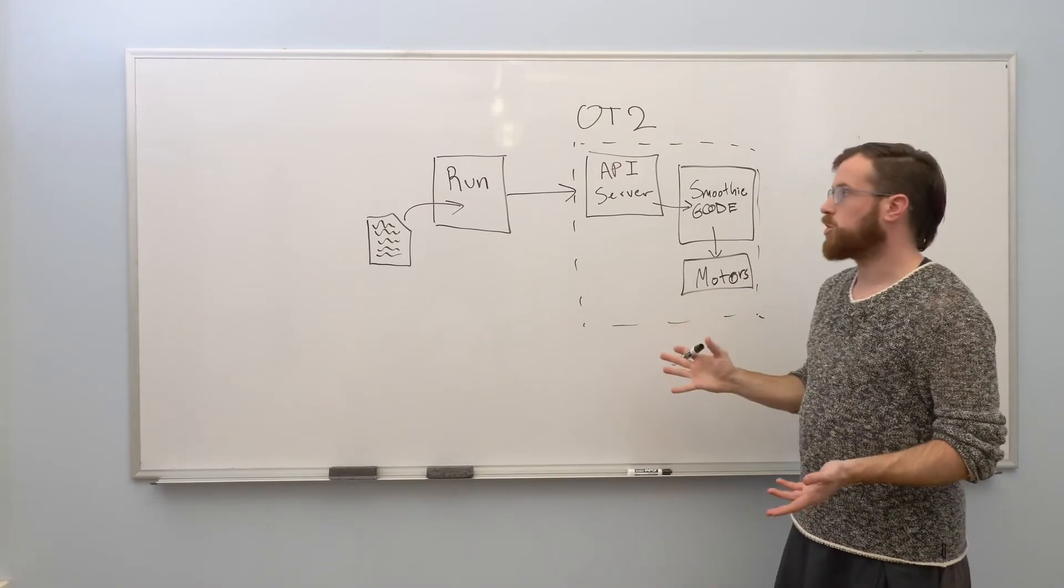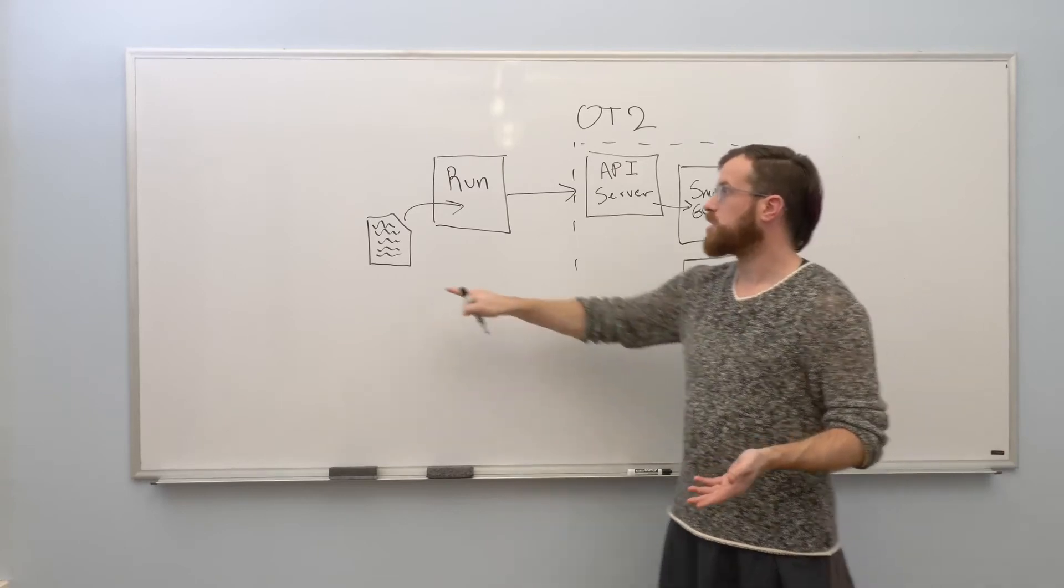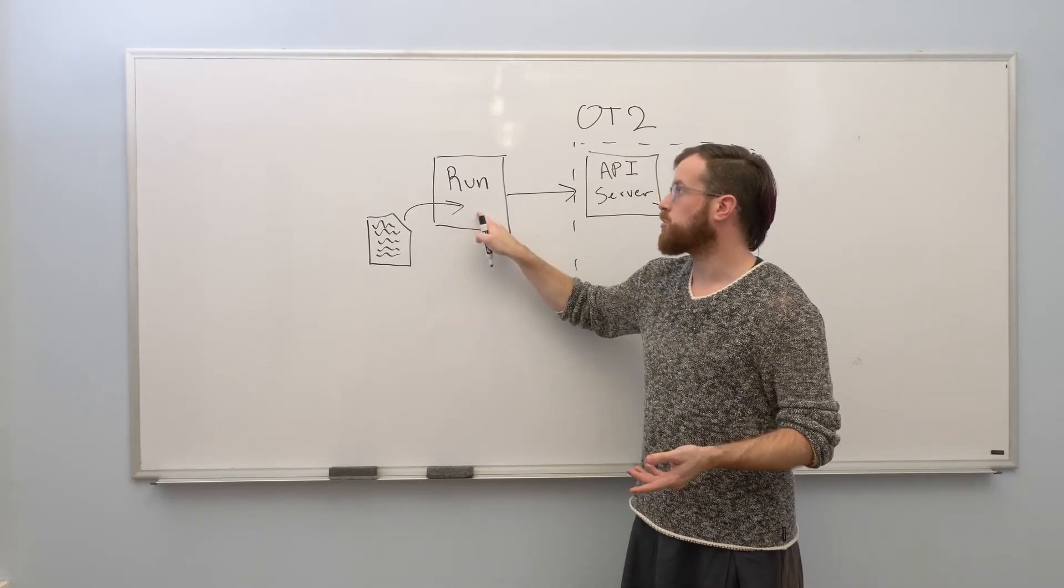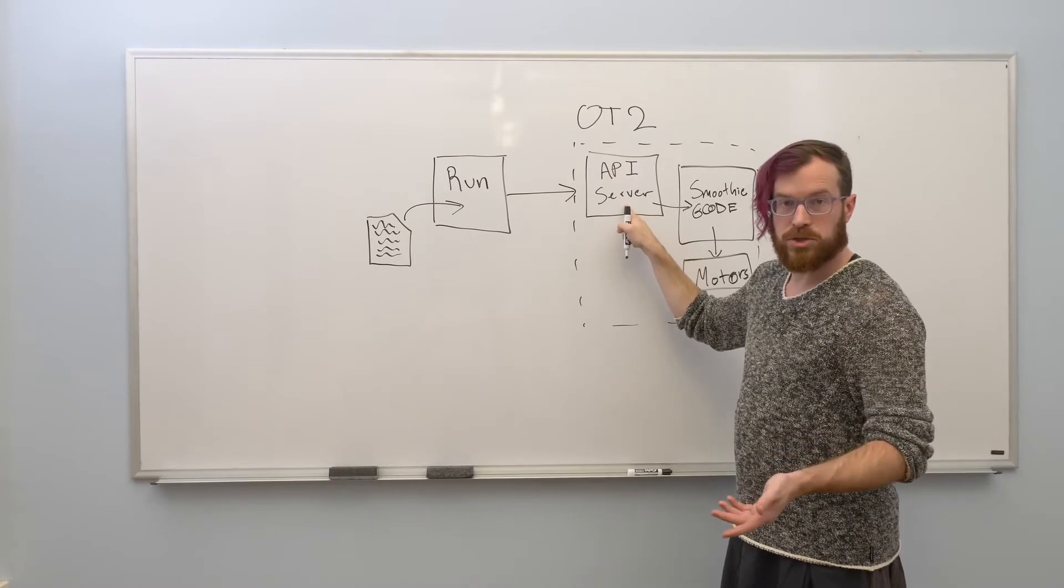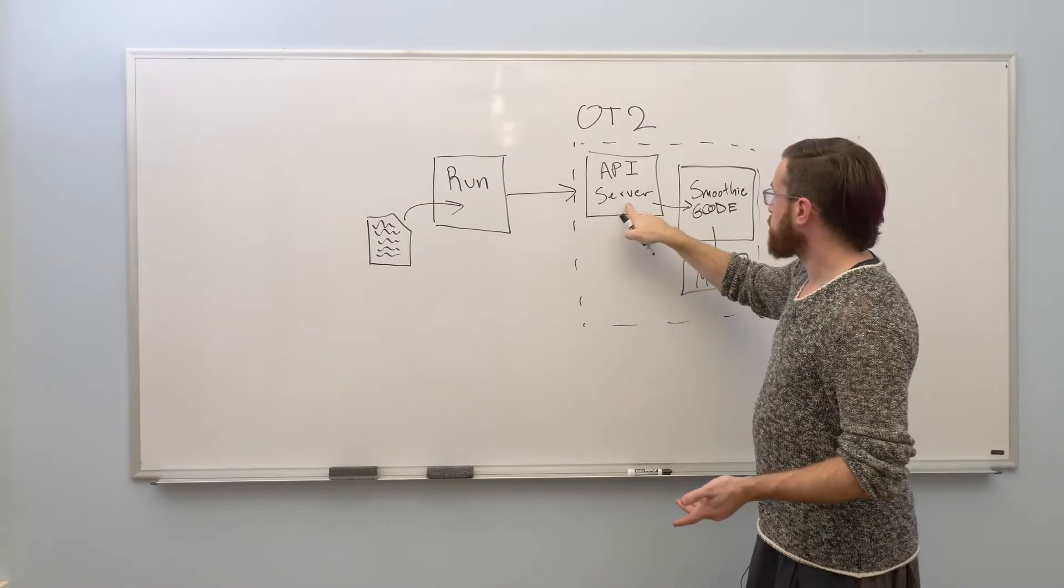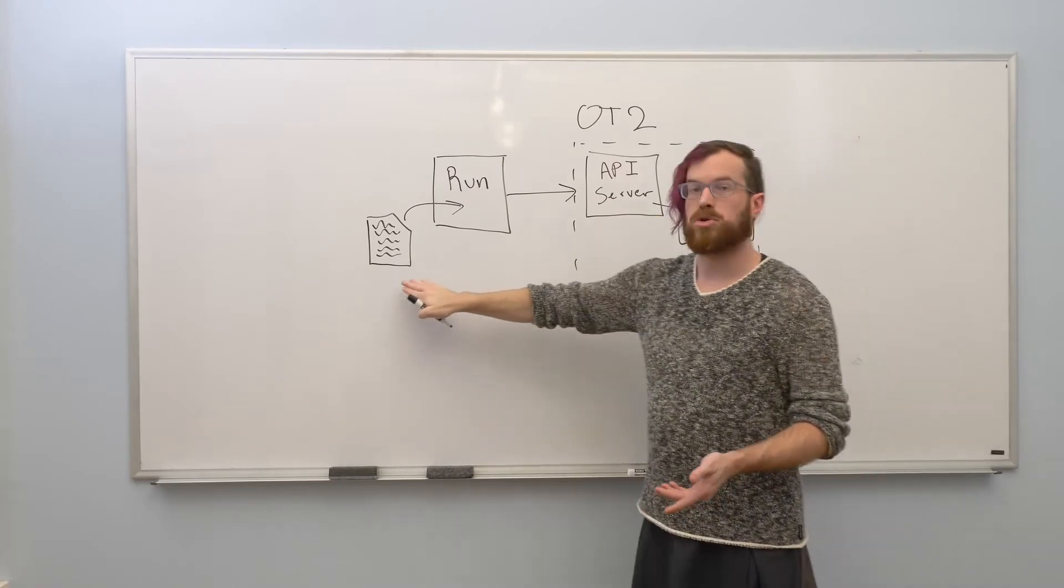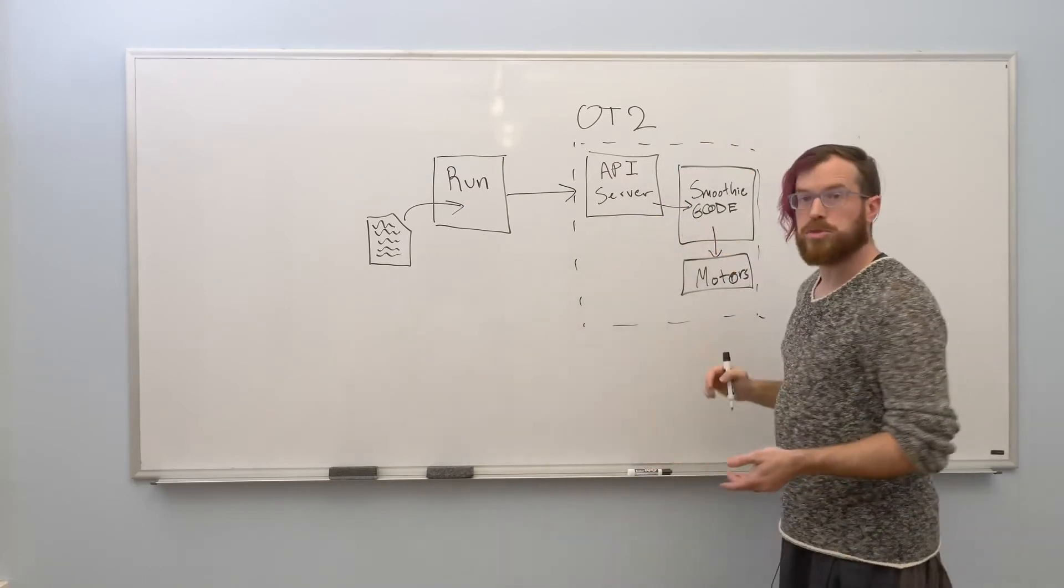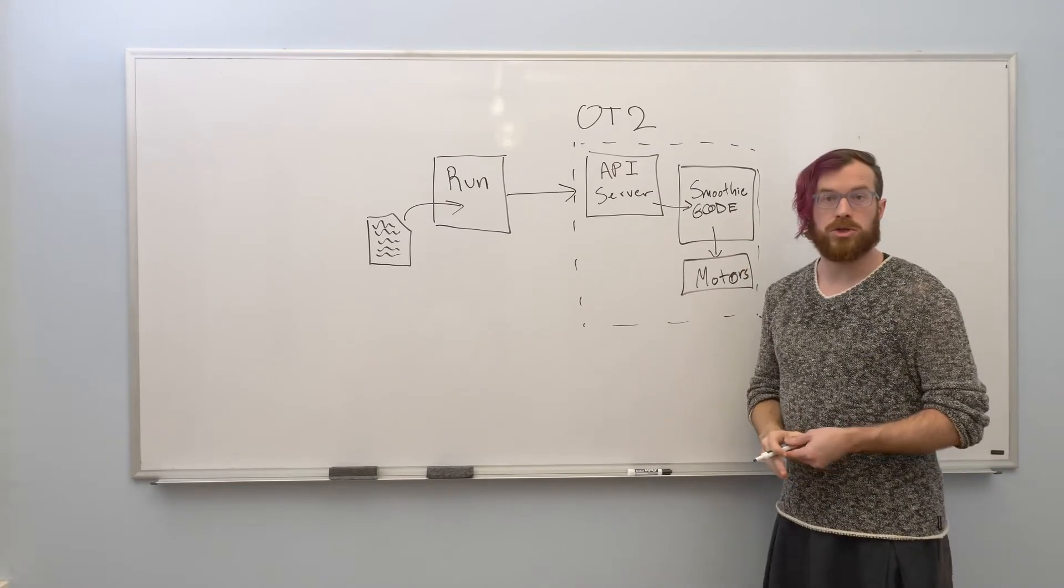So the normal flow whenever you control an OT2 robot is to upload a protocol file into the Run App which transmits it to a connected API server running on a robot. The API server translates the human-readable protocol file into machine-readable g-code commands which are sent to control the motors.